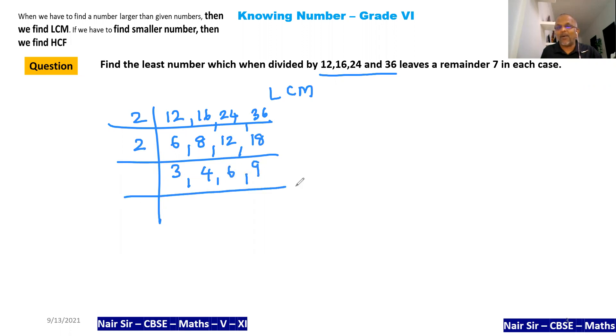Again I'm going to do with 2 because 2 is still there. 3 comes down, 2 times 1 is 2, 3 and 9. Now 2 is over. Now I will check for 3. All this comes in the table of 3. 3 times 1 is 3, 1, 3 times 1 is 3, and 3.